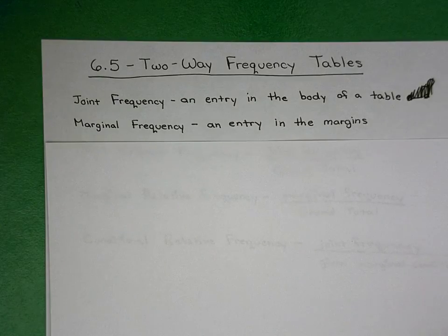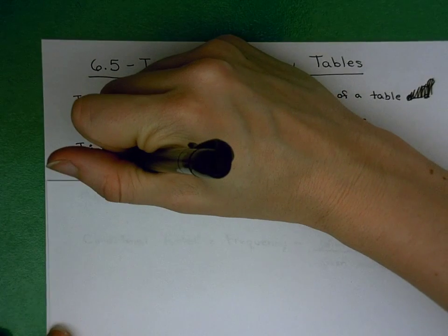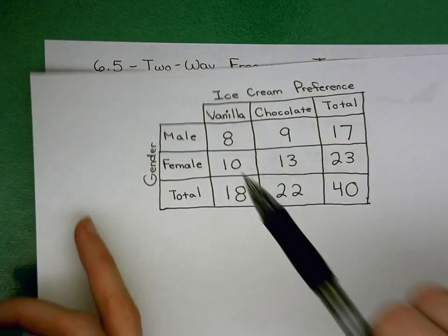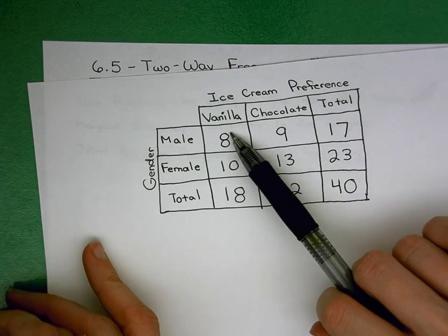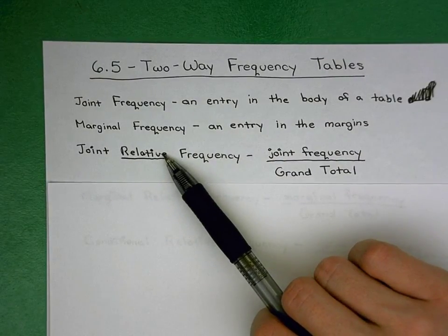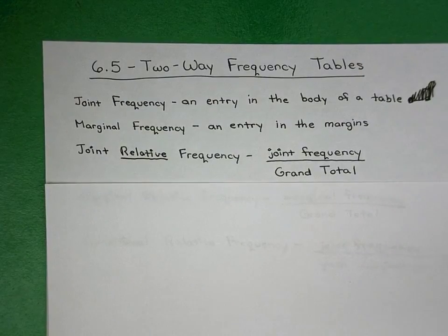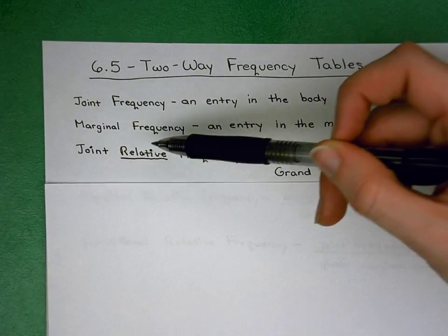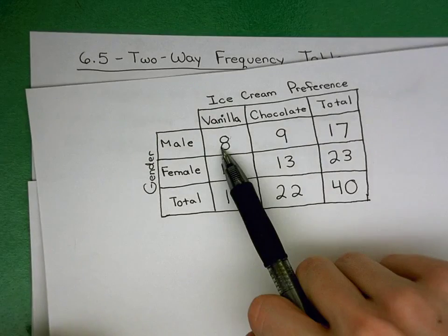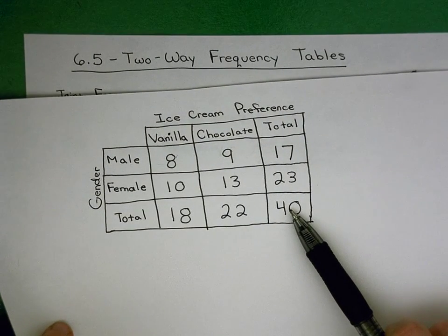We have three more terms. The next one is joint relative frequency. The key word is relative, implying a relationship. Joint frequency is just the number at the joint — male and vanilla would be eight. Joint relative frequency is that joint frequency divided by the grand total. So eight divided by 40, where 40 is the grand total in the bottom corner.